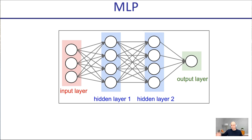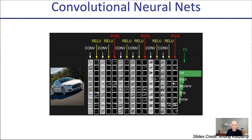You build a multi-layer network that way. Keep in mind: in this lecture the network will represent a Q-function, but in future lectures we'll see neural networks representing a value function, a policy, or even a learned dynamics model for the world the agent is acting in.